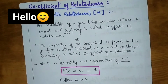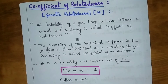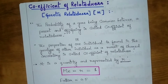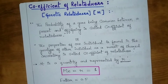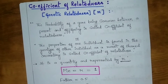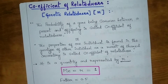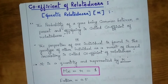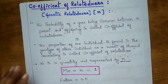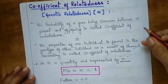Hello everyone, welcome back to my video channel. In this video I will be discussing one of the topics of the CSIR exam, and that is coefficient of relatedness, also called genetic relatedness. Let us know what this is — I will explain by definition.